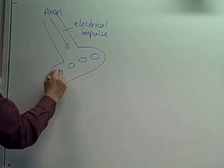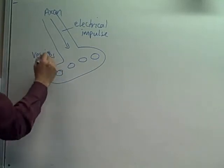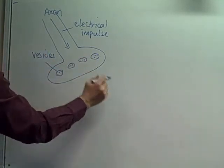It all starts with an electrical impulse that comes down the axon to the axon terminal. In the terminal there are vesicles.